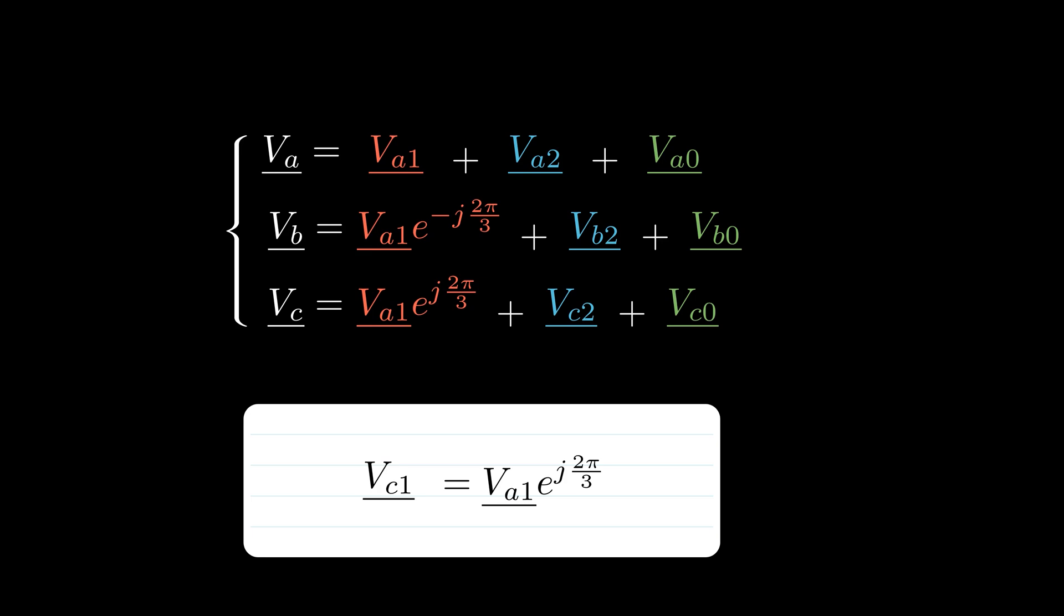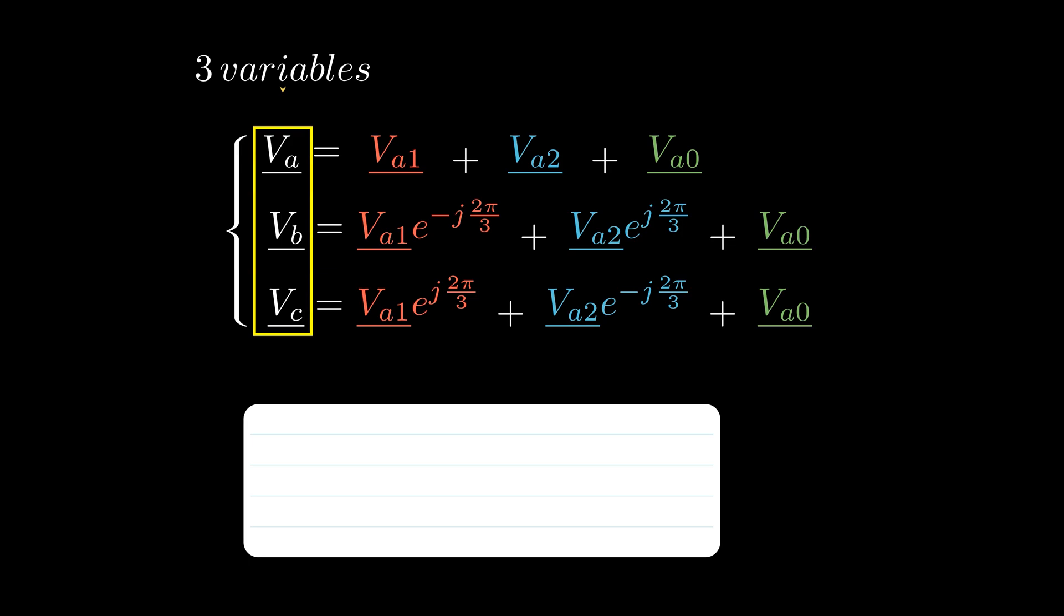Next, for the negative sequence, phase B leads phase A by 2π/3. We can do the replacement. And phase C lags by 2π/3, and we can replace it in the equation. Finally, for the zero sequence, all three phases are equal in both magnitude and angle. We can replace phase B and phase C of the zero sequence in the equations. So for each sequence, we only need one variable, giving us a total of three variables, which makes sense since we shouldn't need more than three independent variables to fully describe the original three unbalanced phase voltages.